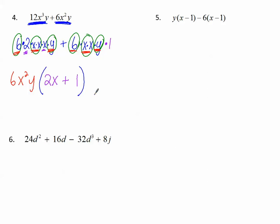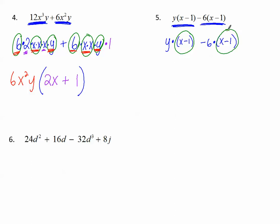Let's look at number 5. The factors of the first term are y and x minus 1 multiplied together. In the second term, I've got negative 6, and multiplied by x minus 1. What's in common this time is a binomial — x minus 1 is in common in both terms. So we take that out: x minus 1 is factored out. What's left over? y from the first term and negative 6 from the second term. There's our factored form using the GCF.